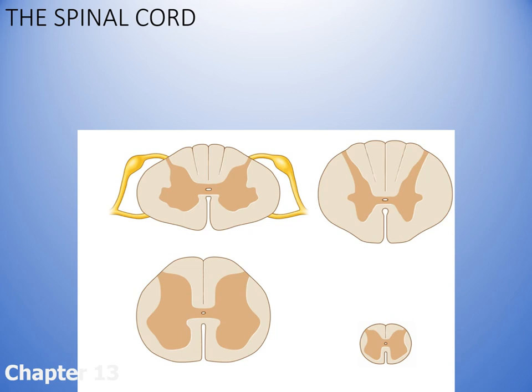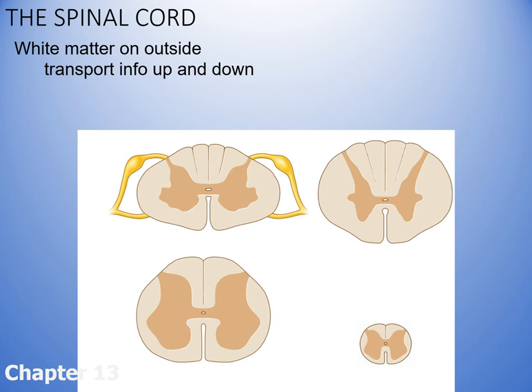You can see the spinal cord here at different levels of the spine — cervical, thoracic, lumbar, and sacral. The spinal cord has white matter on the outside, like a white chocolate covering. White matter is neurons that are running up and down, so imagine there are strings running up and down in the white matter coming out of this picture at you.